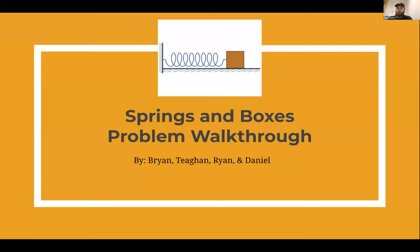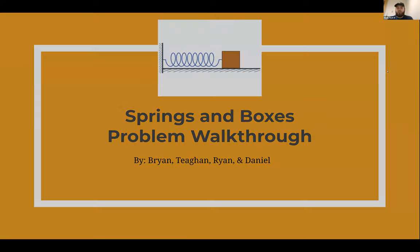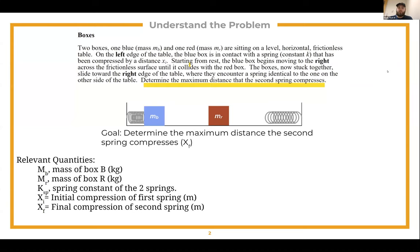Howdy, this is our springs and boxes problem walkthrough. In this problem, we are given two boxes on the table. There is a blue box compressing a spring and a red box just sitting on the table. On the opposite side of the compressed spring, there is another spring that is not compressed. The blue box begins moving towards the red box across the surface until they collide, and then both boxes move together towards the uncompressed spring until they collide with it.